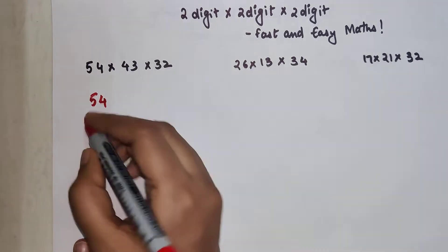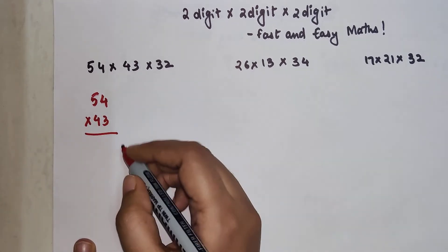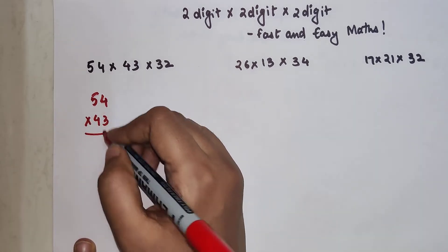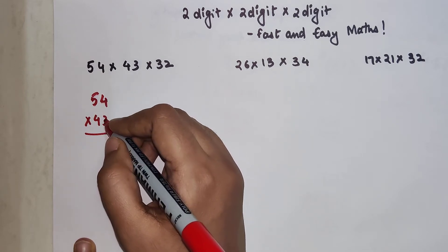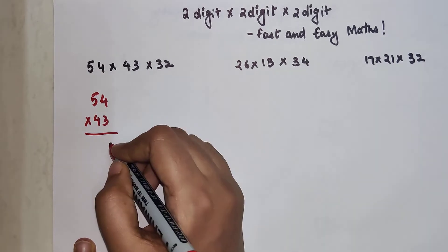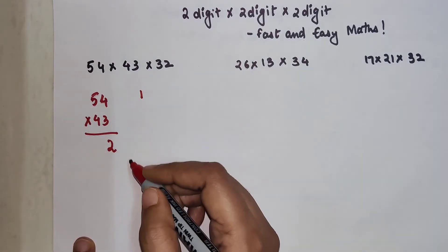So what you have to do is let's first do the first 2 digits. So 54 into 43. First what you should do is multiply vertically. So you have 3 into 4 which is going to get you 12 and I am going to write just 2 and the 1 will be written over here.